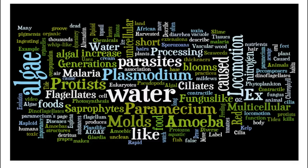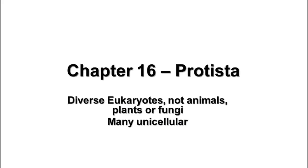This lesson is about Kingdom Protista. When we talked about the kingdoms and learned about classification, we talked about definitions of each one. The definition of protista is that it's kind of the catch-all place, like the junk drawer in the kitchen—it's where you put everything that doesn't fit someplace else. So the definition of a protist is a eukaryote that is not an animal, plant, or fungus.